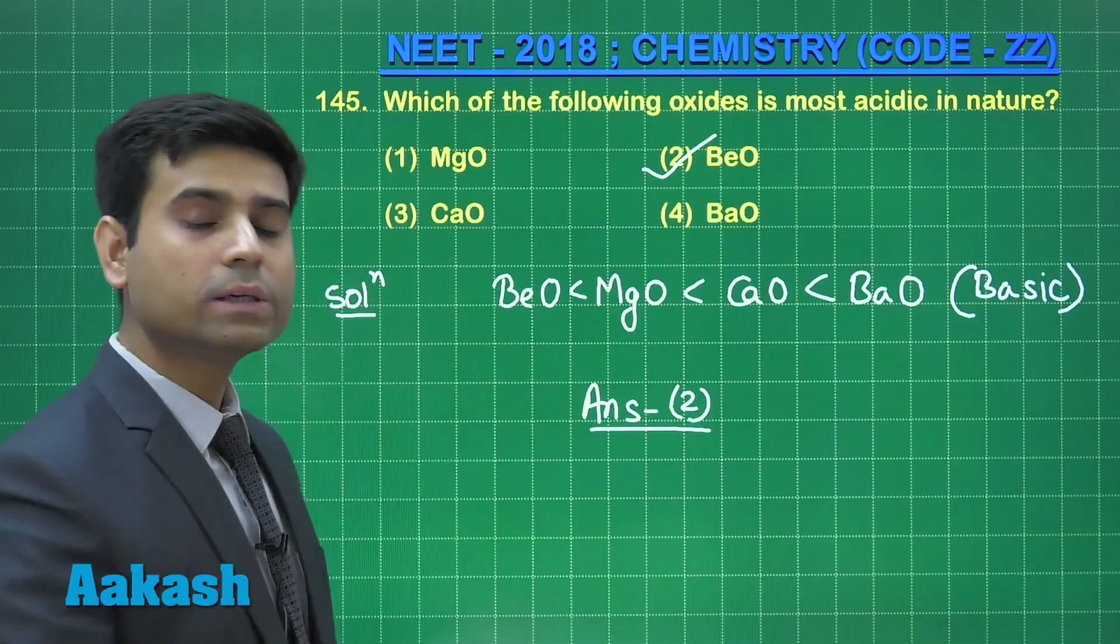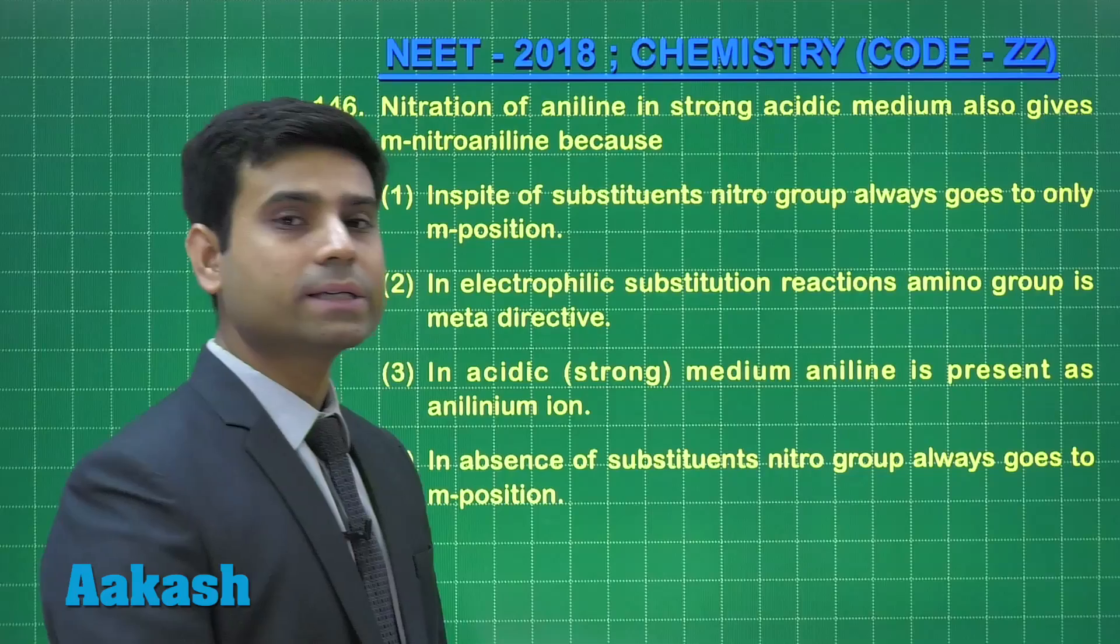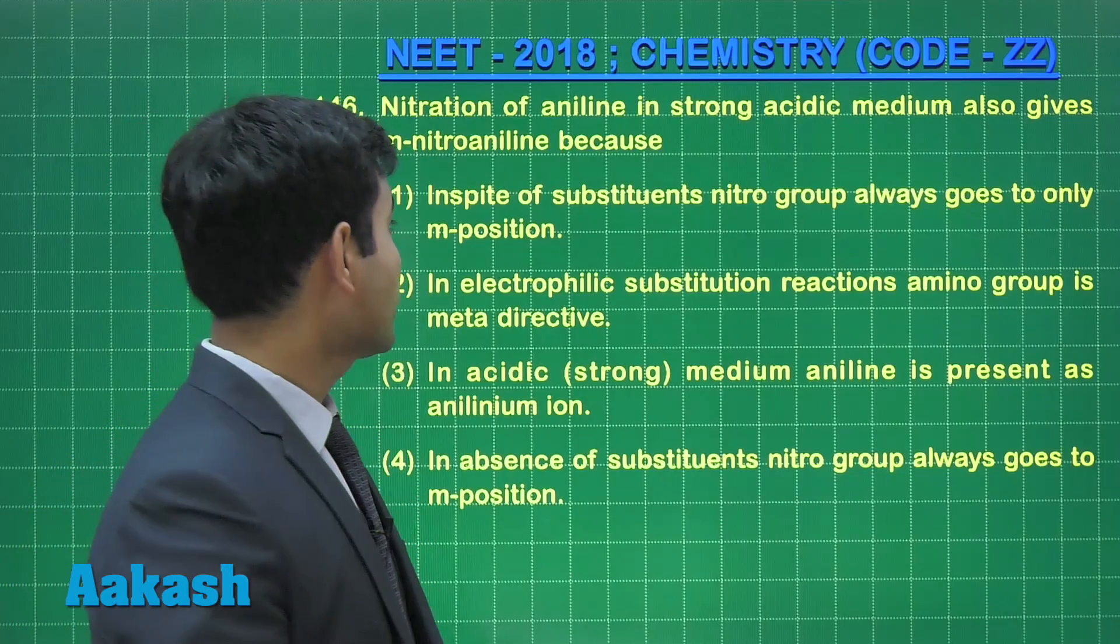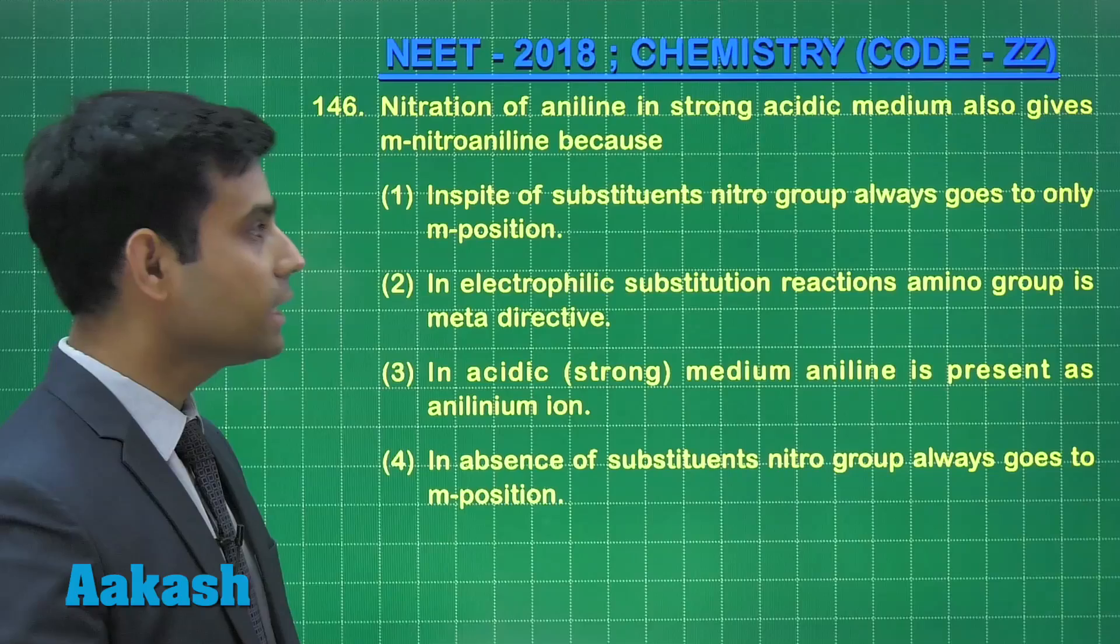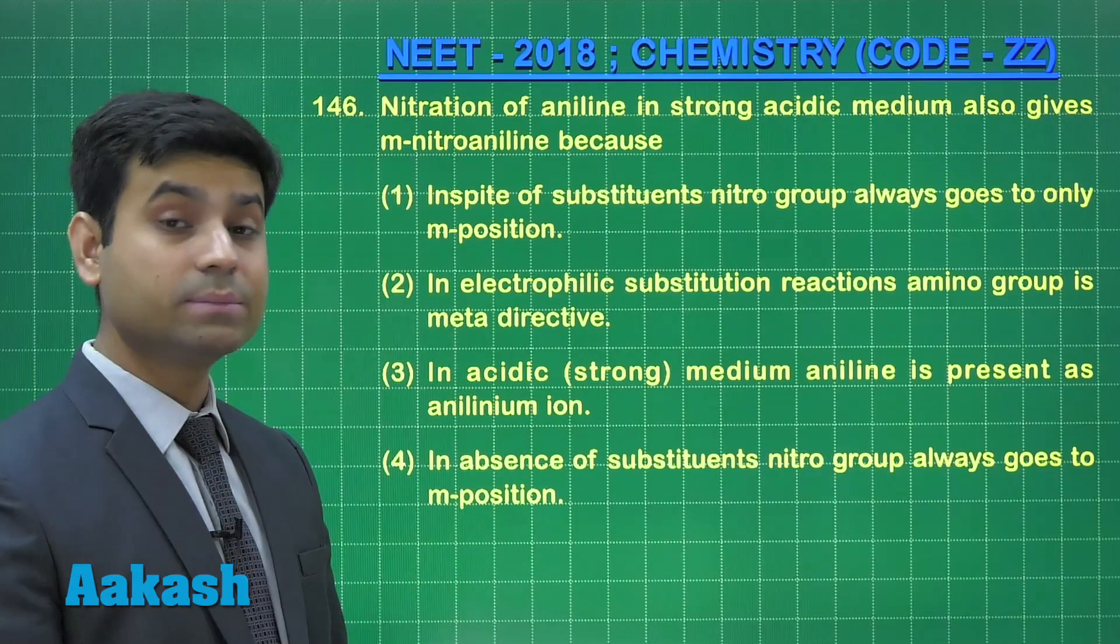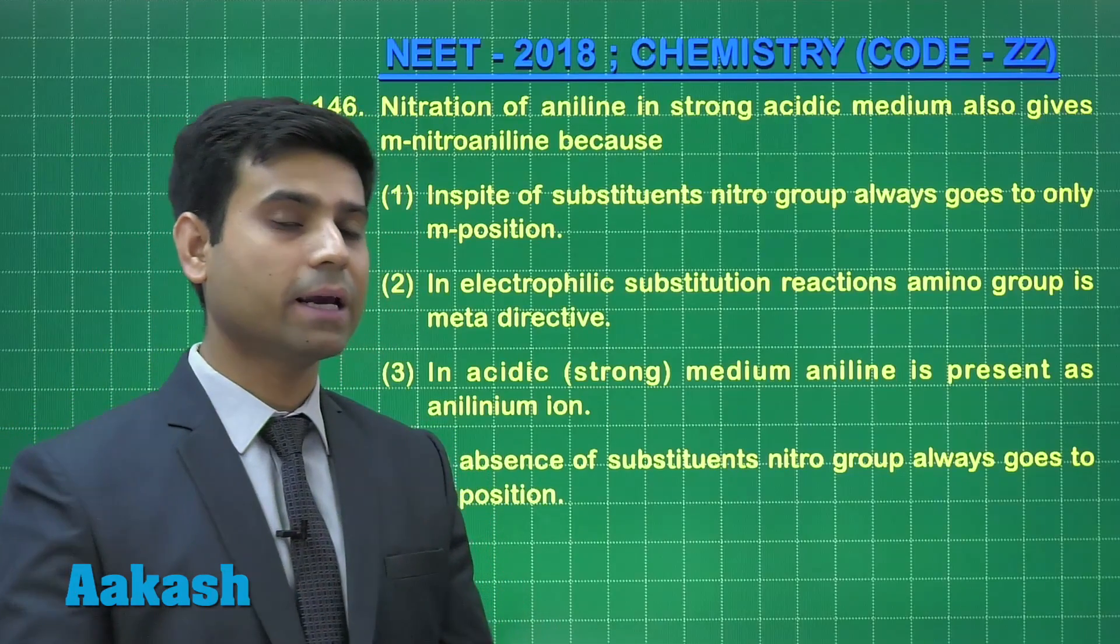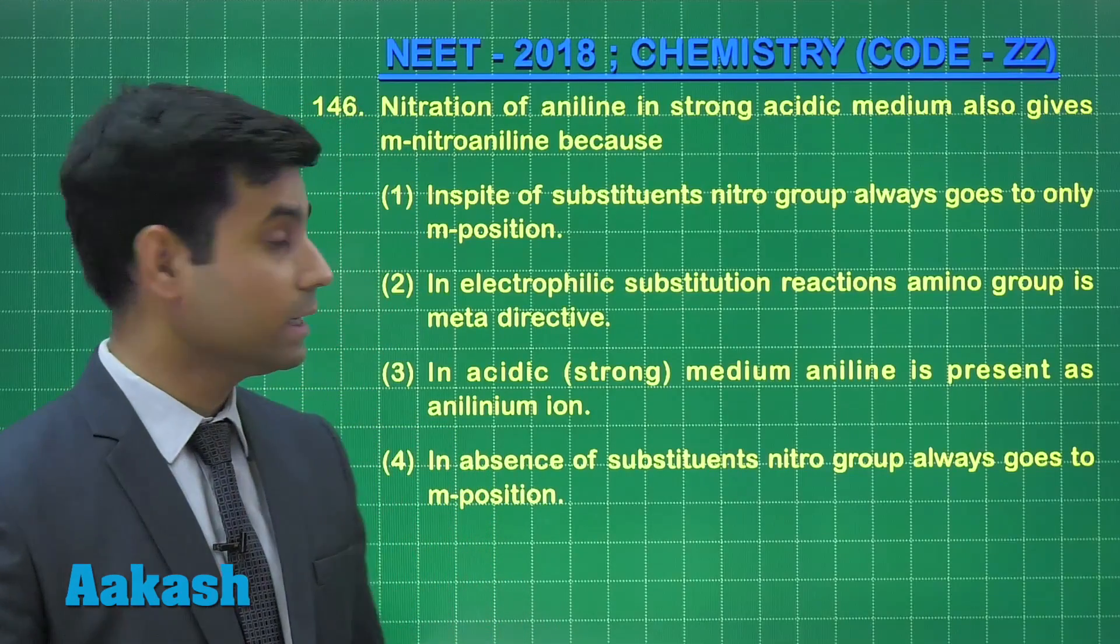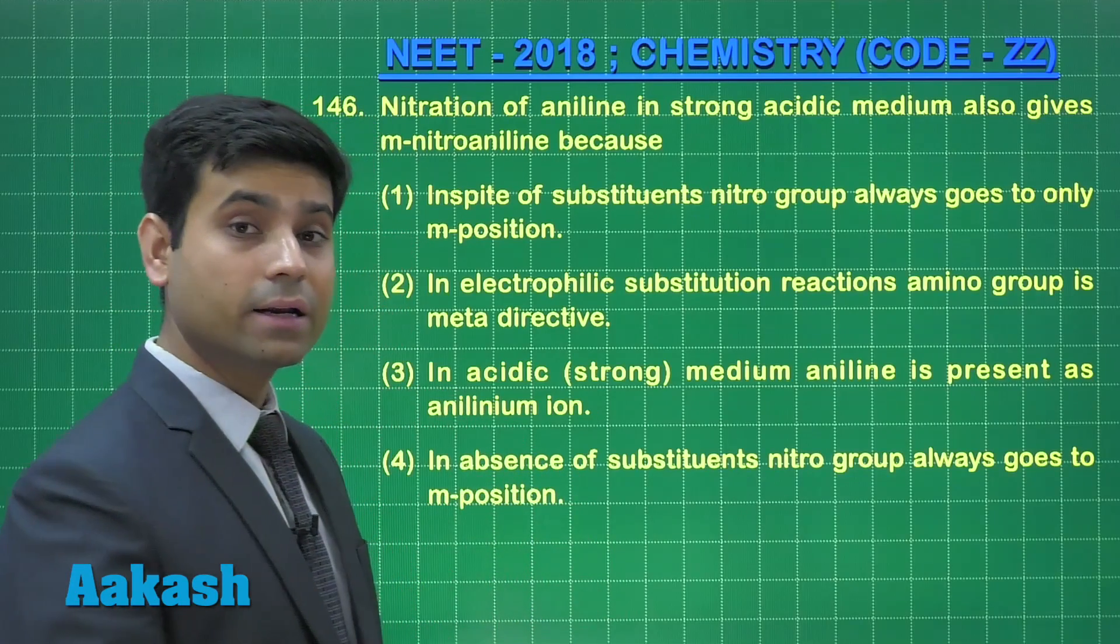Now students let's move to the next question. The next question is question number 146. Question number 146 says nitration of aniline in strong acidic medium also gives meta nitroaniline when the aniline undergoes nitration. What are the options here?